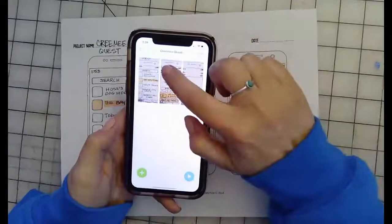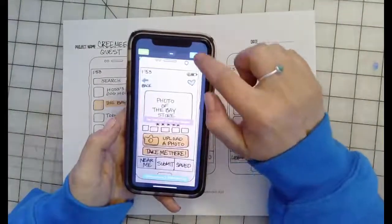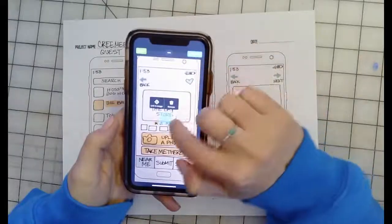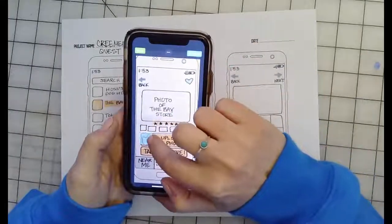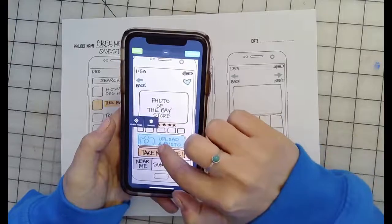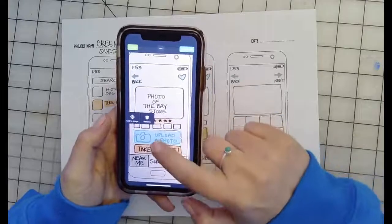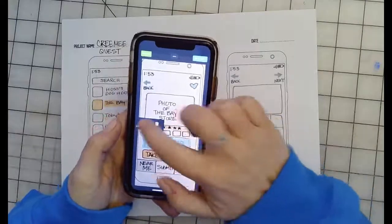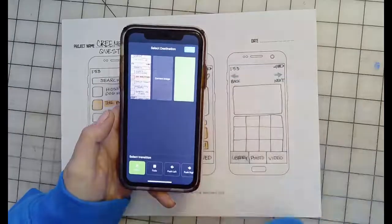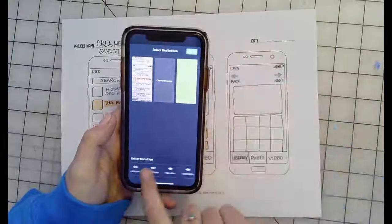Now I'm going to do my second page. Again, tap add link. On this page, I'm going to say when I tap this button, the upload photo button, it's going to take me to this page where I'm going to upload my photo, and my transition is going to be a slide left. Tap done, done.